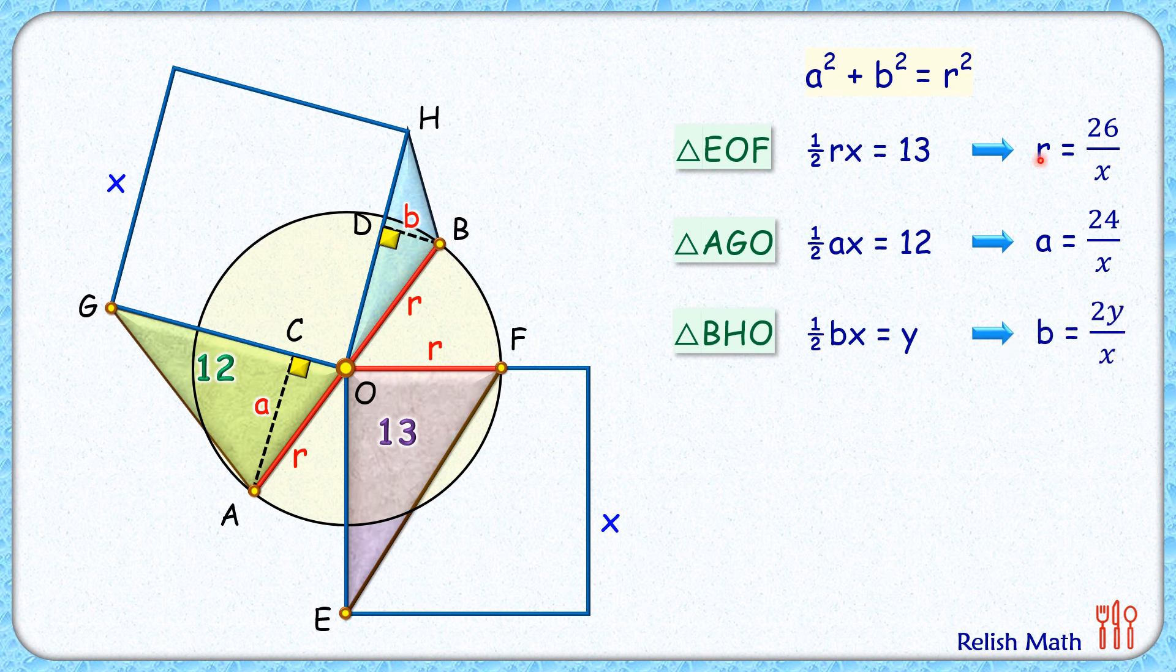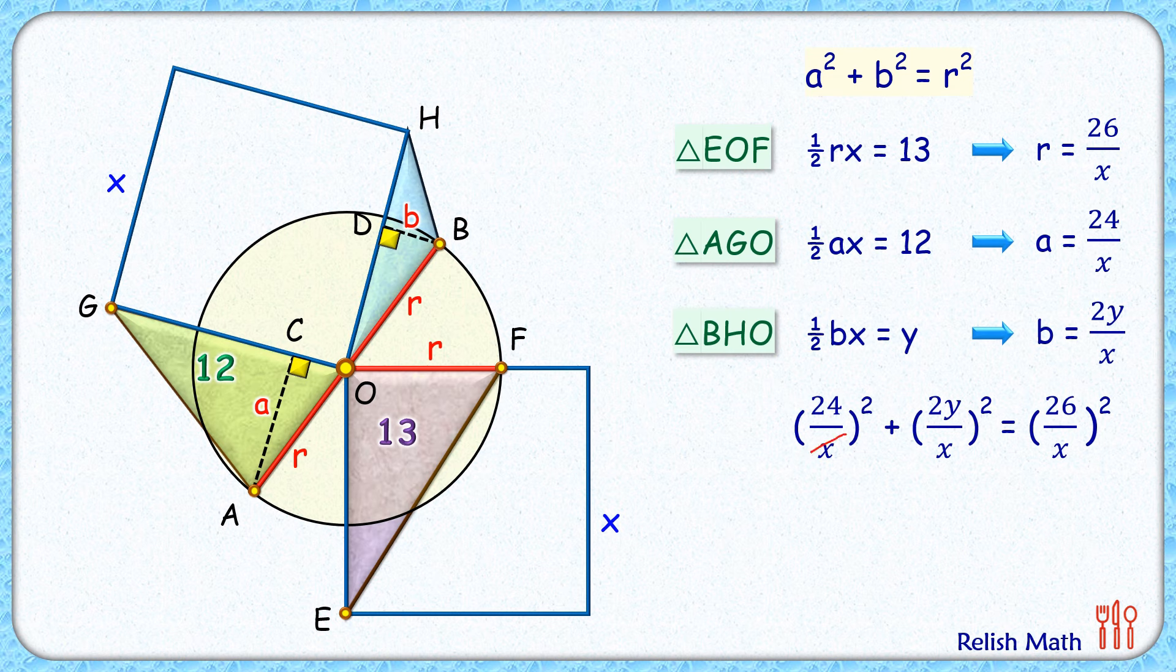Now this value of r, a, and b we can put in this first equation and we will get our relation in this form. Now if you look carefully both side LHS and RHS this x square will get cancelled down. So we will get 24² + (2y)² = 26². Now dividing equation by 2² on both sides. So we will get 12² + y² = 13². Simplifying we'll get value of y as 5.